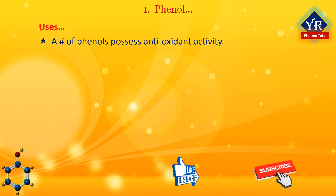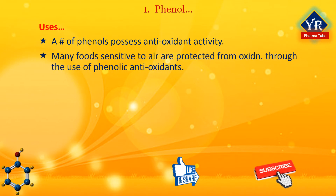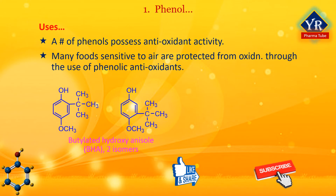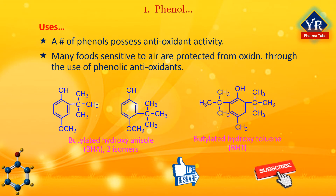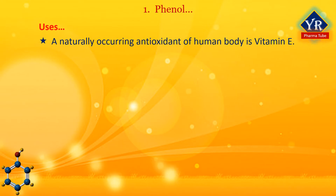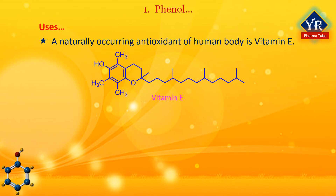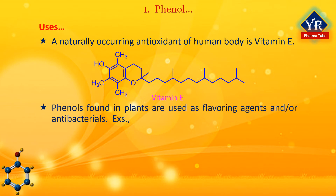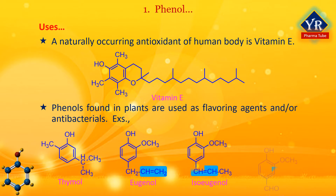A number of phenols possess antioxidant activity. An antioxidant is a substance that protects other substances from being oxidized by being oxidized itself in preference to the other substances. Many foods sensitive to air are protected from oxidation through the use of phenolic antioxidants. Two commercially important phenolic antioxidant food preservatives are BHA (butylated hydroxyanisole) and BHT (butylated hydroxytoluene). A naturally occurring phenolic antioxidant important in the functioning of the human body is vitamin E. A number of phenols found in plants are used as flavoring agents and are antibacterials, including thymol, eugenol, isoeugenol and vanillin.